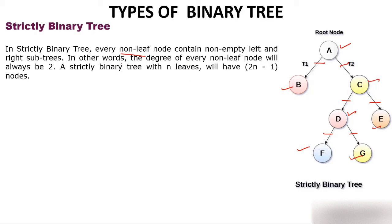In other words, the degree of every non-leaf node will be two — always two. A has degree 2, C is an internal non-leaf node with degree 2, and D is a non-leaf node with degree 2. So this definition is confirmed.